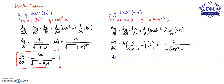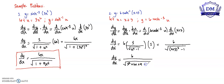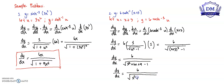Expanding (x plus 3) squared gives x squared plus 6x plus 9, then minus 1. Therefore, the derivative of y with respect to x is equal to 6 all over the square root of x squared plus 6x plus 8.